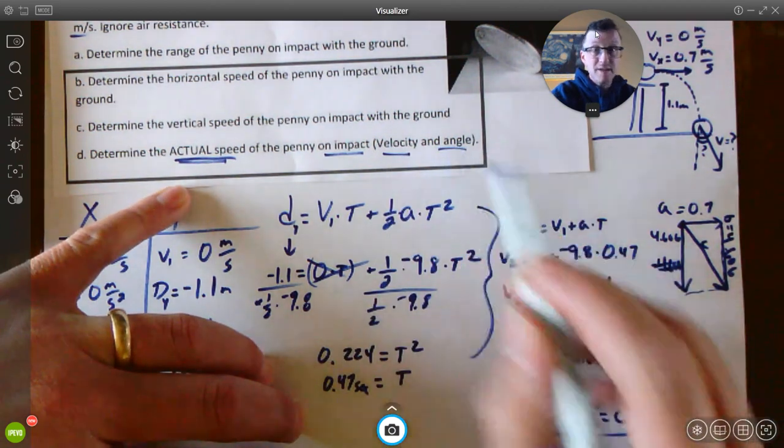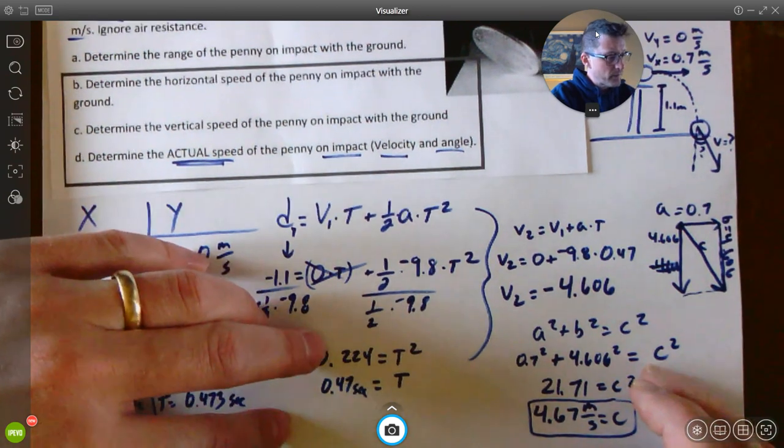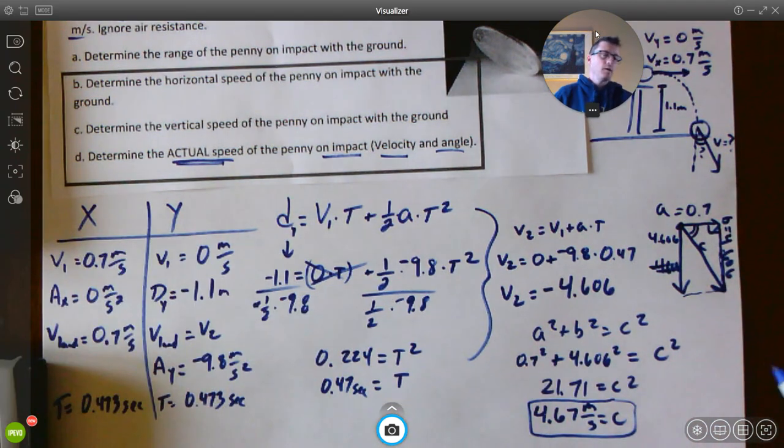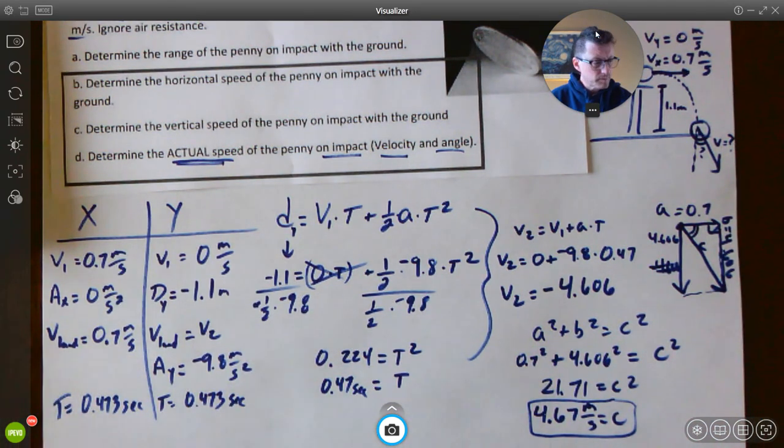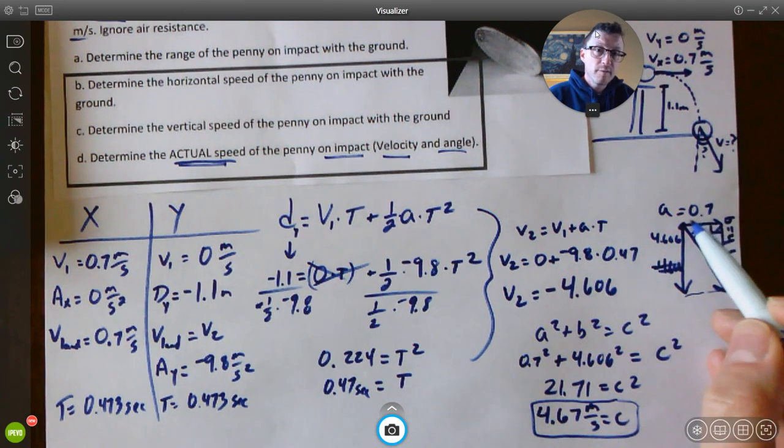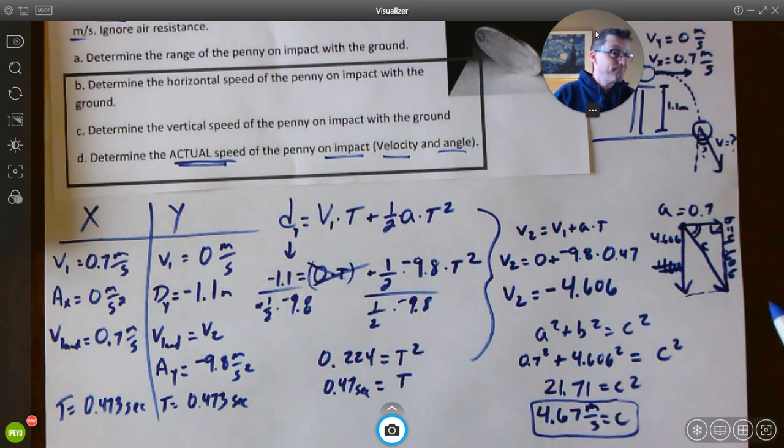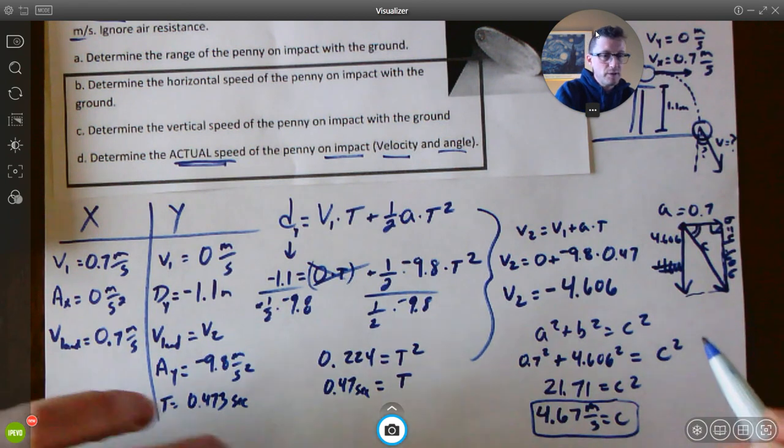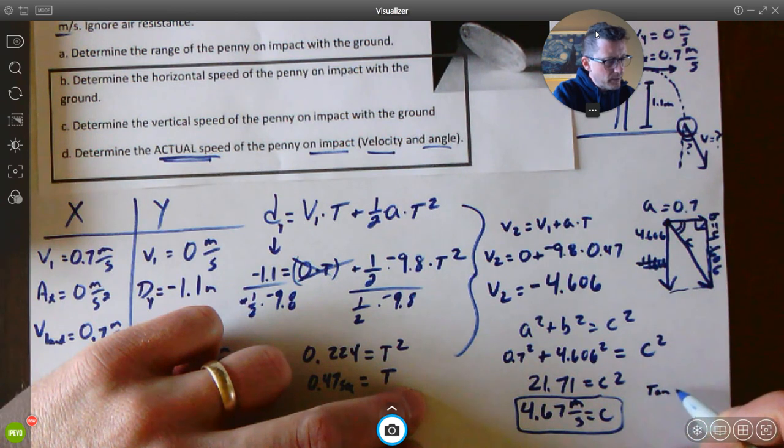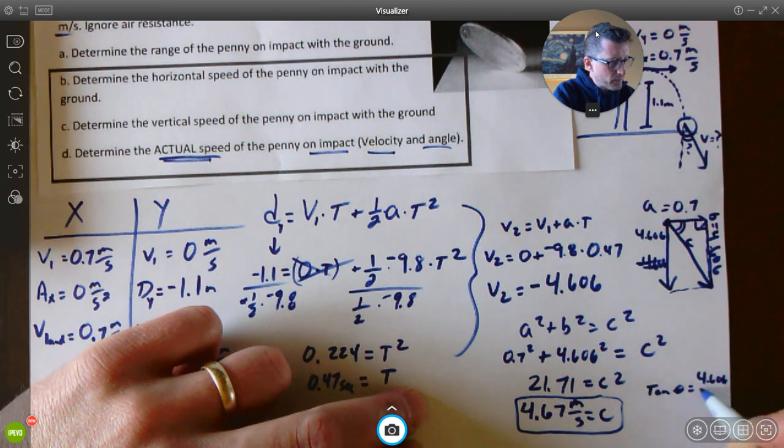Now, we've got to figure out the angle. So, you have your triangle, right? Here's the right angle. This is the angle we're looking for. So, a couple of ways you could do this. If you have an angle, this side would be the opposite, and this side would be the adjacent. What's opposite over adjacent? Tangent. Okay. So, I'm going to say tangent of theta equals opposite 4.606 over the adjacent 0.7.